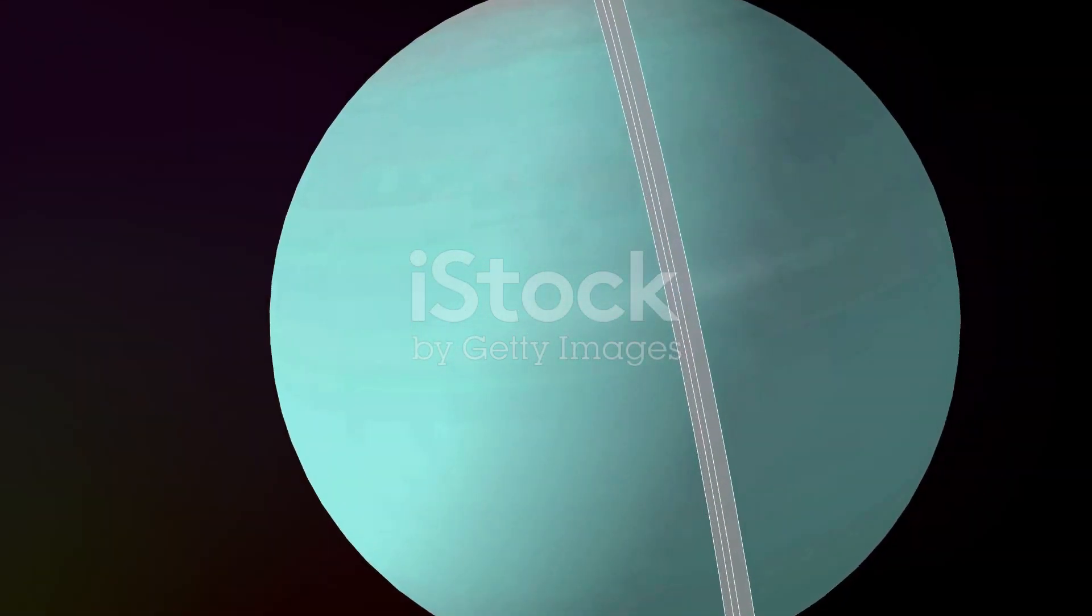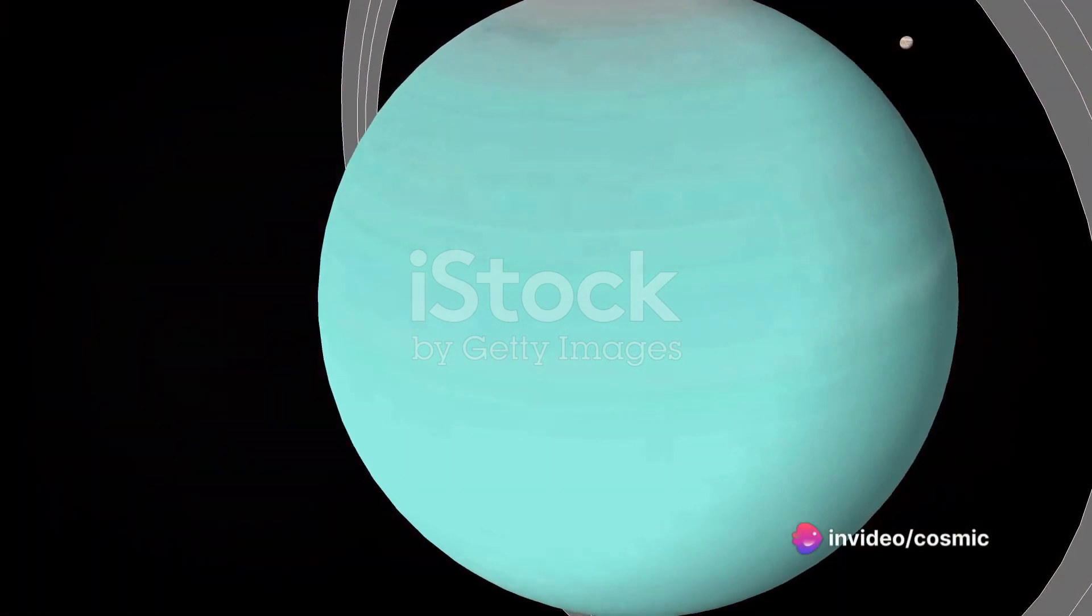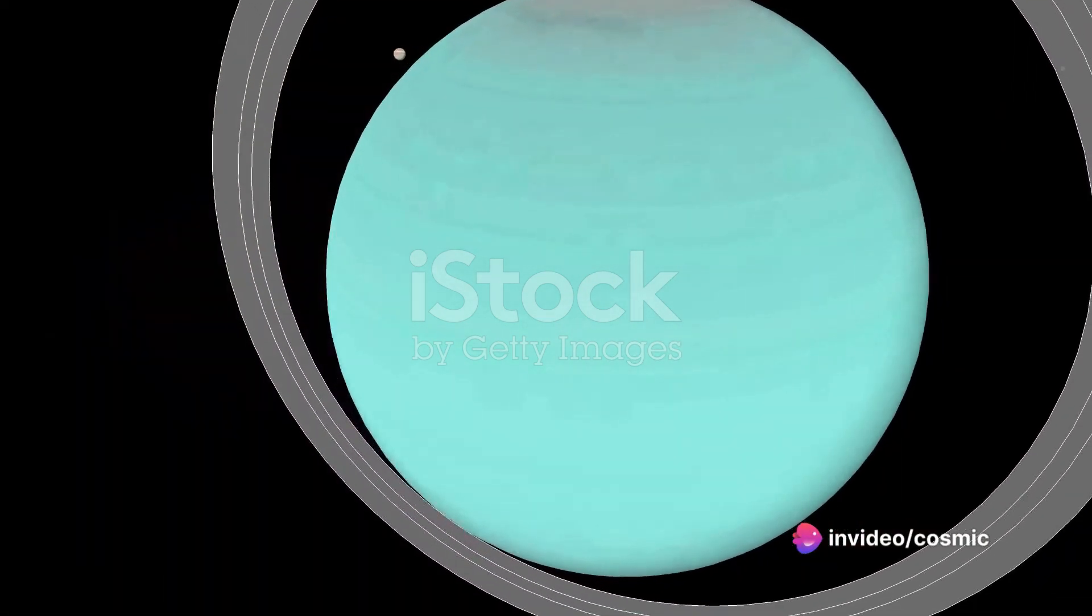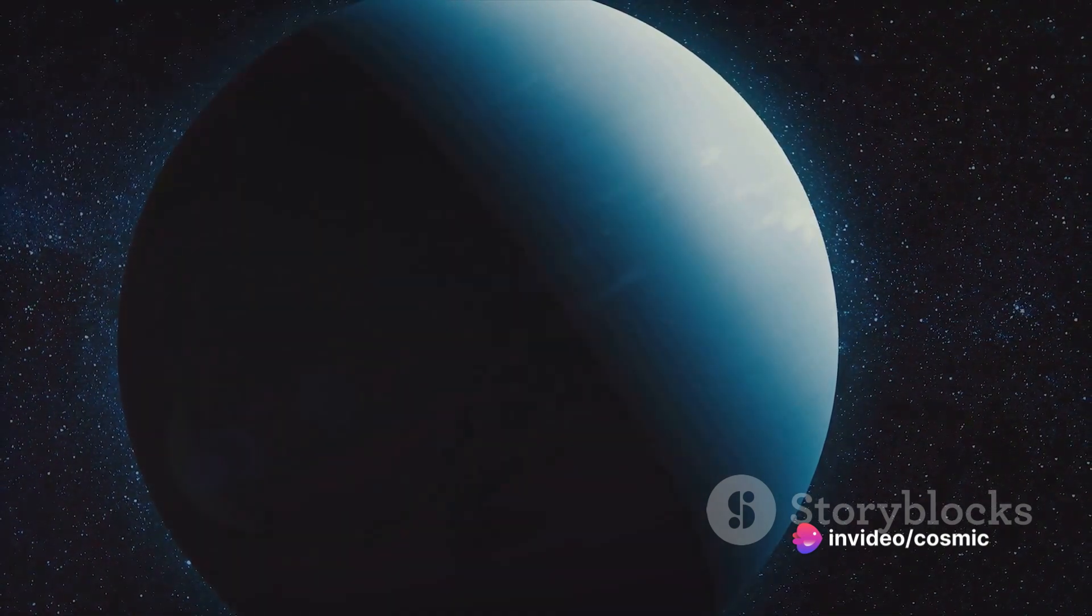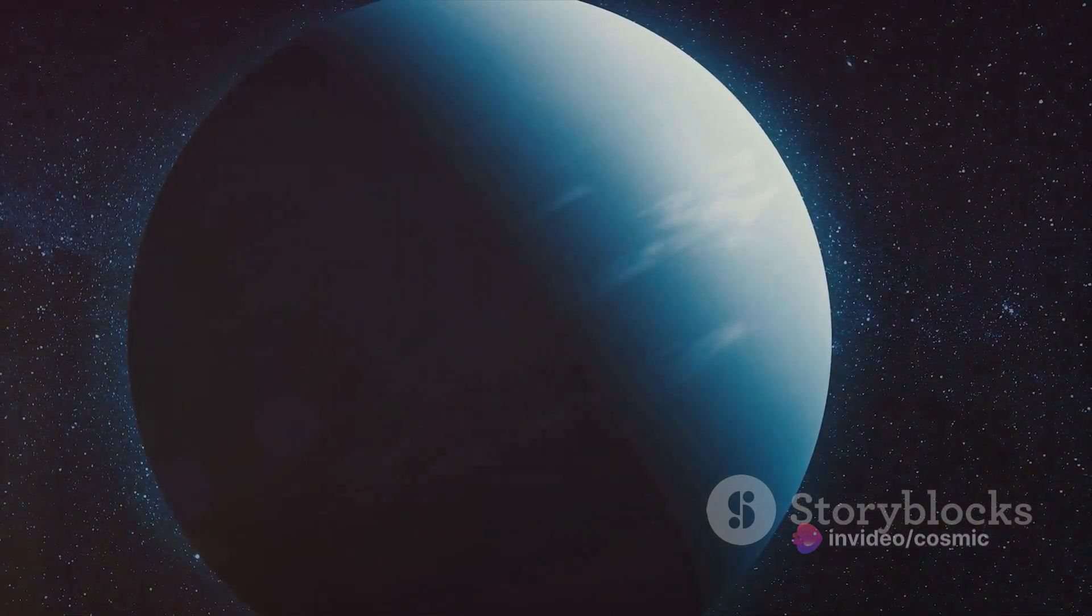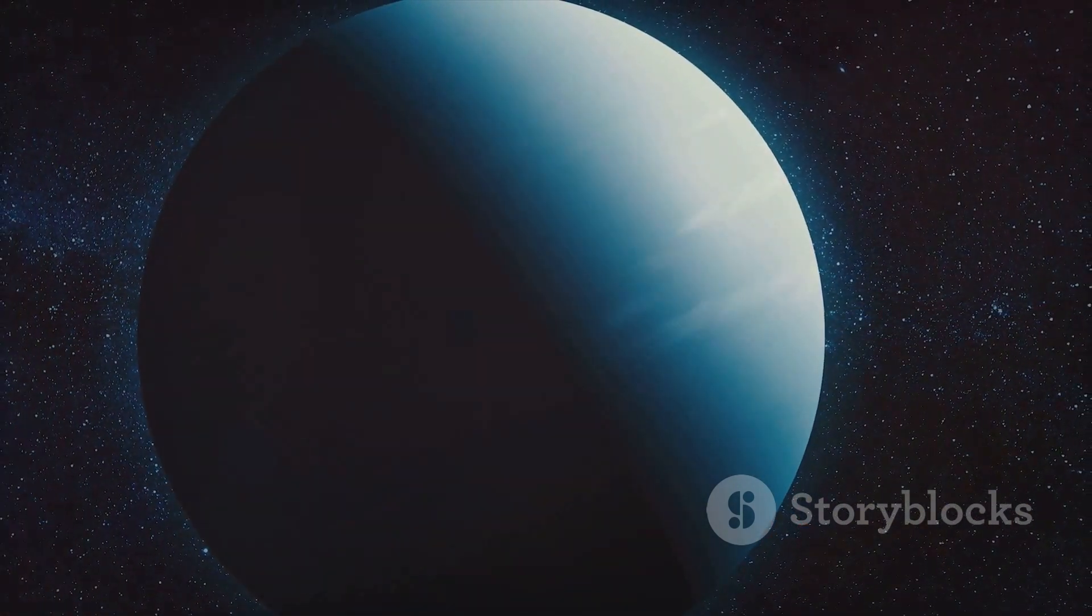Much like its sibling Neptune, Uranus is an ice giant, a type of planet composed mainly of substances with freezing points above about 100 degrees Kelvin, such as water, ammonia, and methane.